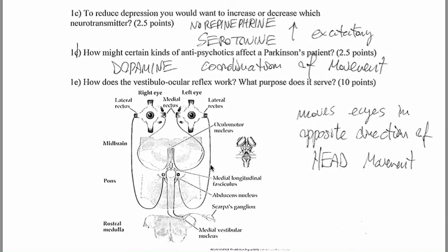The second part of the first question is 1C. To reduce depression you need to increase or decrease which one of the neurotransmitters? So, you want to increase norepinephrine or serotonin, which give you excitatory behavior and help with depression. 1D is how might certain kind of anti-psychotic affect a Parkinson patient? Dopamine can help with the coordination of movement.